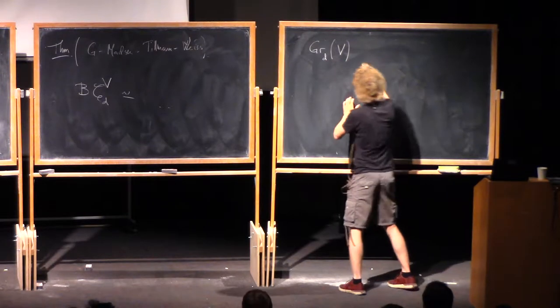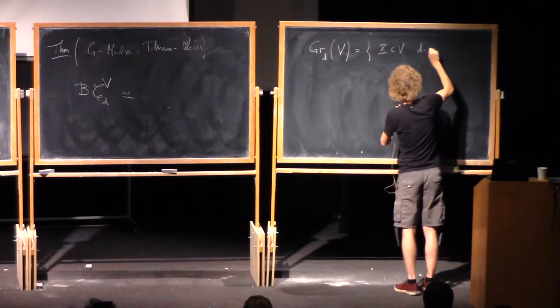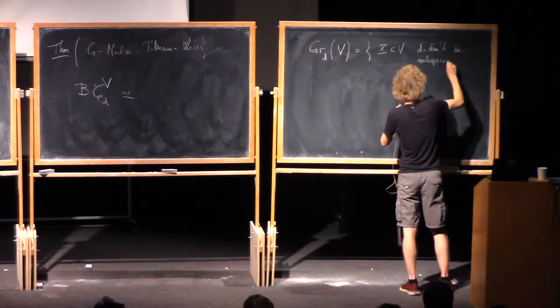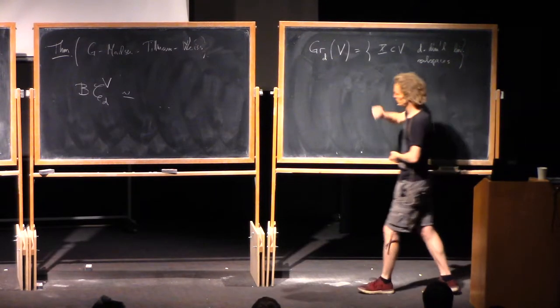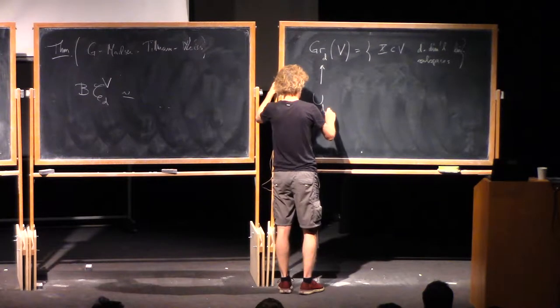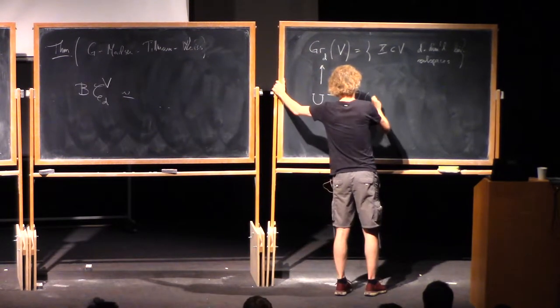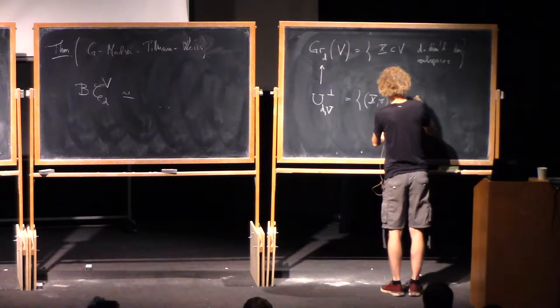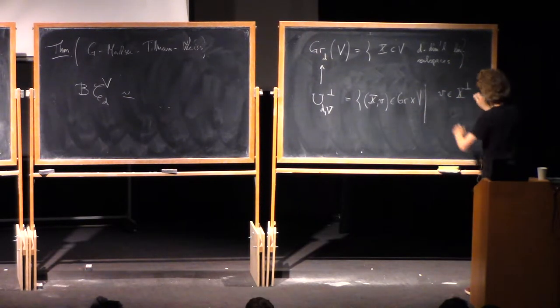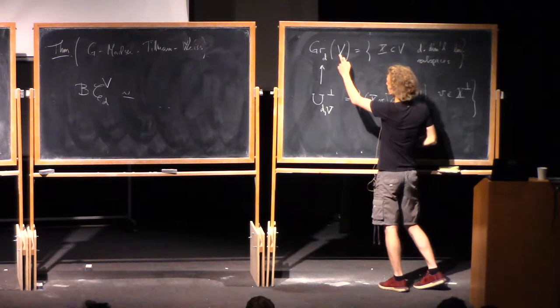So that's the Grassmannian of d-planes in V. What should I call that? No, X or something. D-dimensional linear subspaces. So the usual Grassmannian of d-planes in V, the usual topology. Over that there's a vector bundle called the universal vector bundle, and there's its orthogonal complement. It's just the space of pairs (x,v) in the Grassmannian cross V itself. So that little v is in the orthogonal complement of the space. So this is a vector bundle whose fiber dimension is dimension of V minus d.